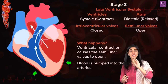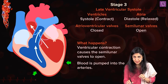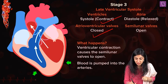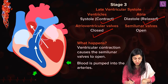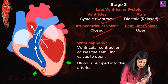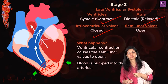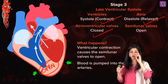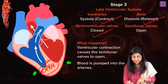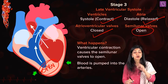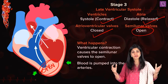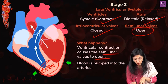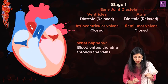Late ventricular systole (late VS): the ventricles are still contracting, pressure is increasing, AV valves are closed, and atria are relaxed. Due to this increased contraction, the semilunar valves now open. For MCQs, remember: semilunar valves open in late VS. Ventricular contraction causes semilunar valves to open and blood is pumped into the arteries.